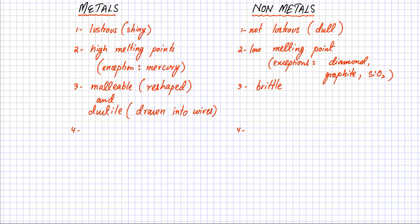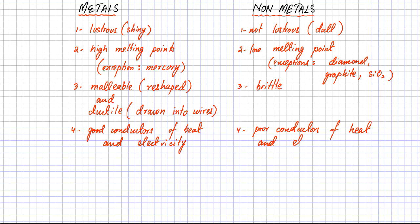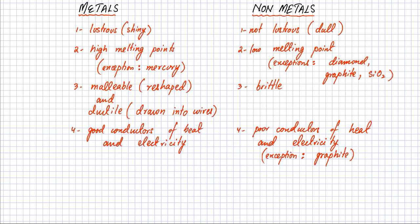The fourth major difference between a metal and non-metal is that generally metals are very good conductors — good conductors of both heat and electricity. Non-metals, on the other hand, are generally very poor conductors of heat and electricity. There is one exception: graphite is a relatively very good conductor of electricity. So generally speaking, excluding all exceptions, metals tend to be very good conductors whereas non-metals tend to be very bad or poor conductors.